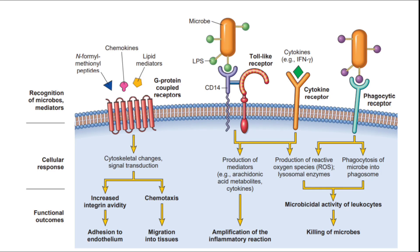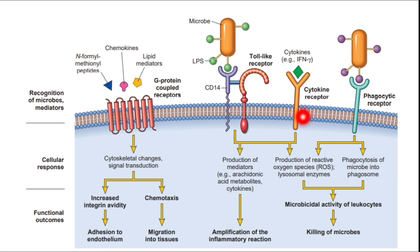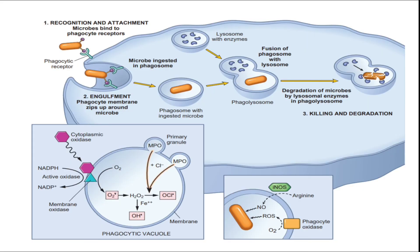Another image from Robbins demonstrates how the microbe is recognized by different receptors: phagocytic receptors, cytokine receptors, toll-like receptors, and G-protein coupled receptors. GPCRs primarily perform chemotaxis, initiating unidirectional movement of leukocytes toward the site of injury. Activation of toll-like receptors can activate phospholipase enzymes, amplifying the inflammatory response through production of arachidonic acid metabolites such as prostaglandins and neutral leukotrienes. This concludes our lecture on phagocytosis.